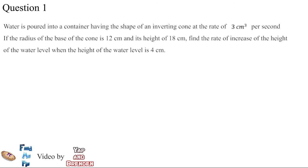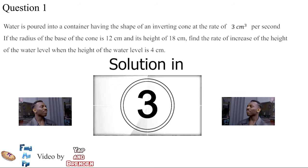Question 1: Water is poured into a container having the shape of an inverted cone at the rate of 3 cm³ per second. If the radius of the base of the cone is 12 centimeters and its height is 18 centimeters, find the rate of increase of the height of the water level when the height of the water level is 4 centimeters. First, you have to redraw the diagram.